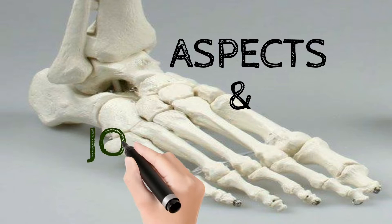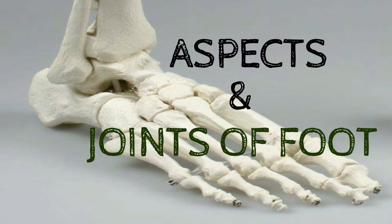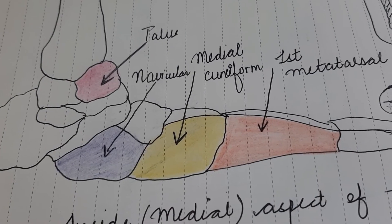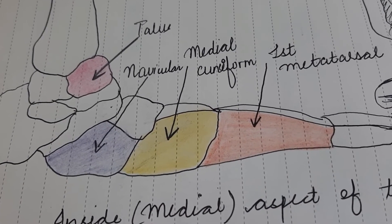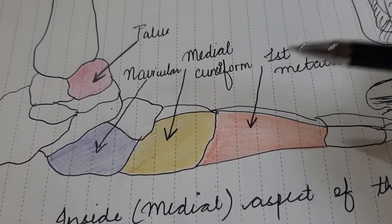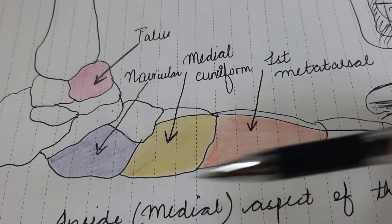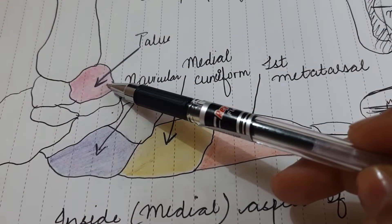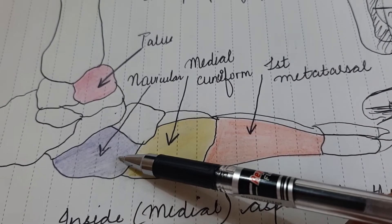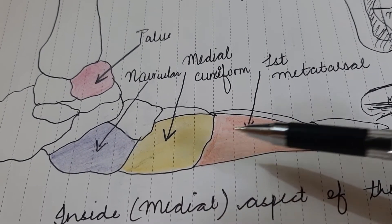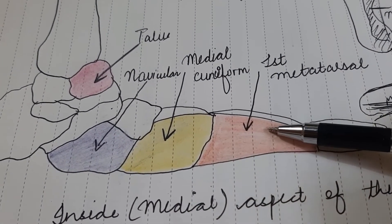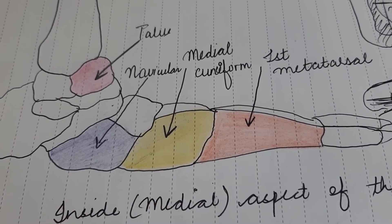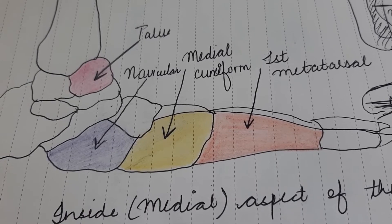The foot has two aspects: medial and lateral. Firstly, we are going to see the medial aspect of the foot. When you look at the medial aspect, you will see these bones: talus, navicular, medial cuneiform, and the first metatarsal. That is the medial aspect of the foot. Now we will see the lateral aspect.